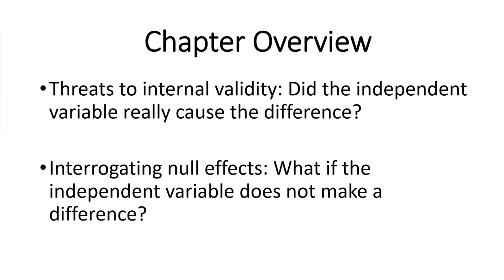For our overview today, we're going to break the chapter into two big chunks. The first chunk focuses on threats to internal validity — stuff we've already started touching upon but going into more depth. We want to see if our independent variable was actually responsible for the difference in our dependent variable. Then we'll look at interrogating null effects: what if, after all that careful planning, your independent variable didn't actually influence the dependent variable? That's almost the more important part of this chapter, because a lot of people don't actually know what to do with null results.